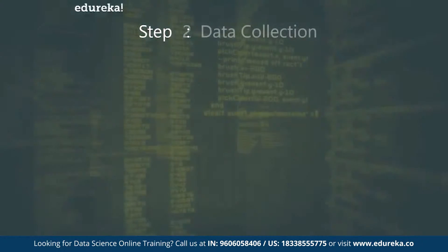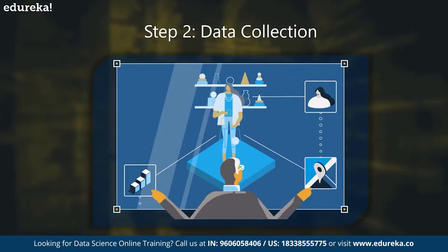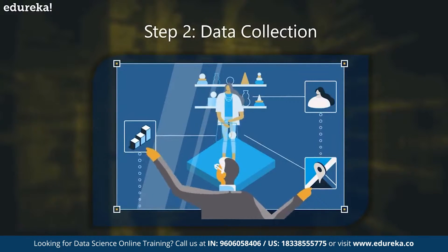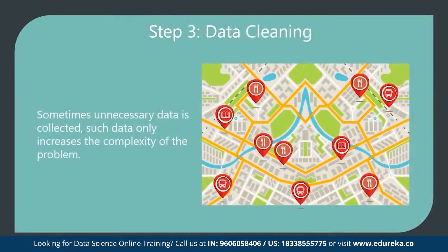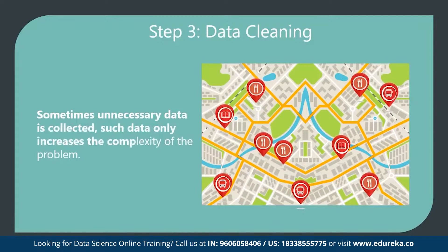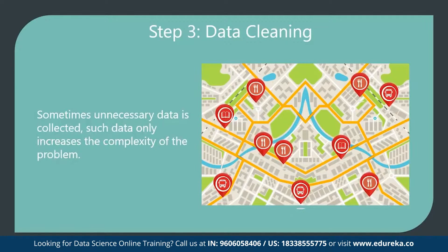This is followed by data collection. Uber collects data such as the weather, historical data, holidays, time, traffic, pickup and drop location, and keeps track of all of this. The next stage is data cleaning. Sometimes unnecessary data is collected, which only increases the complexity of the problem. For example, Uber might collect information like the location of nearby restaurants and cafes. Such data is not needed to analyze Uber's surge pricing, so it has to be removed at this step.